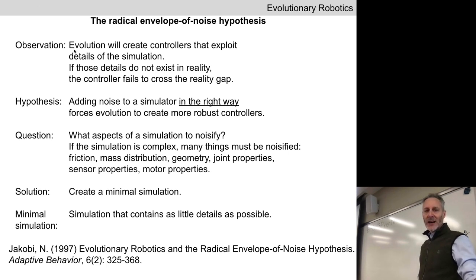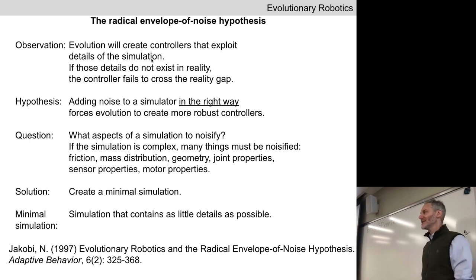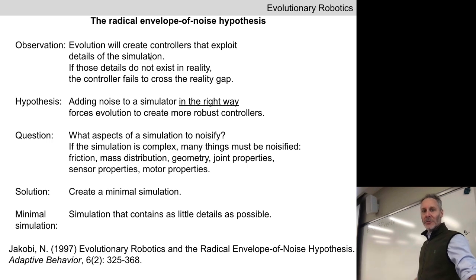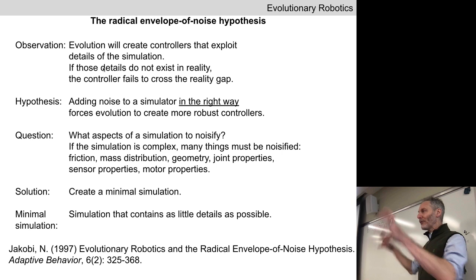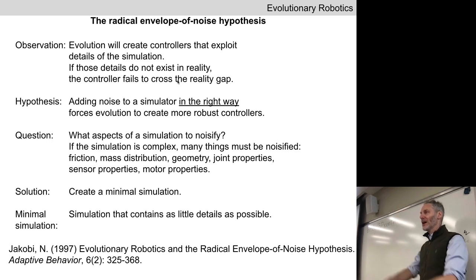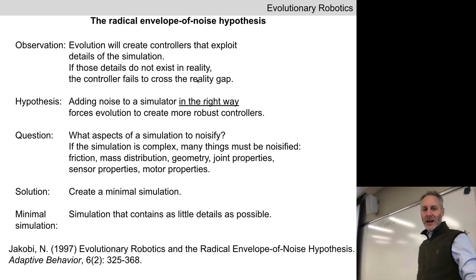The observation back at that time was that artificial evolution will probably create neural controllers that exploit details of the simulation. Perverse instantiation has been known in AI and robotics for a very long time — that's another problem obviously related to the reality gap. So if evolution exploits details in the simulation that don't exist in reality, we have the reality gap. Whatever evolves in simulation is unlikely to transfer to reality.